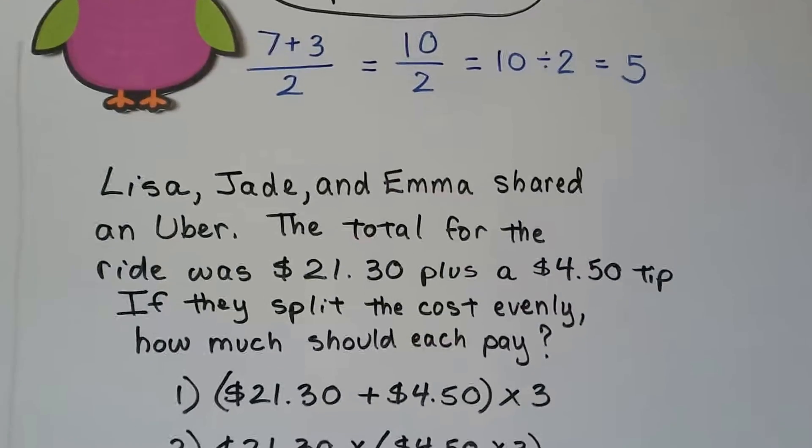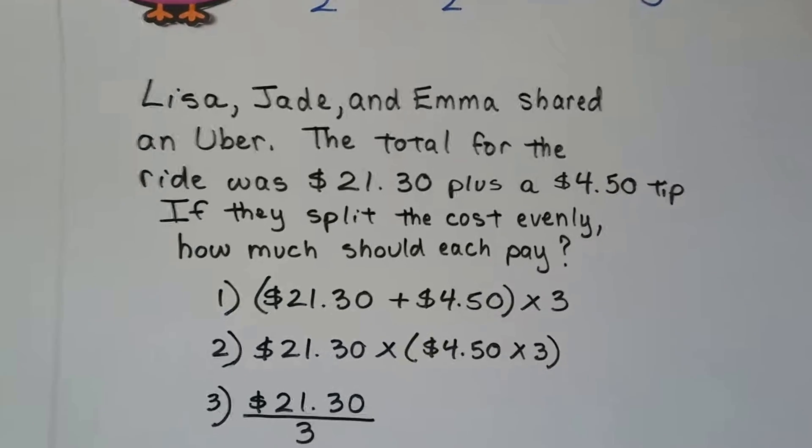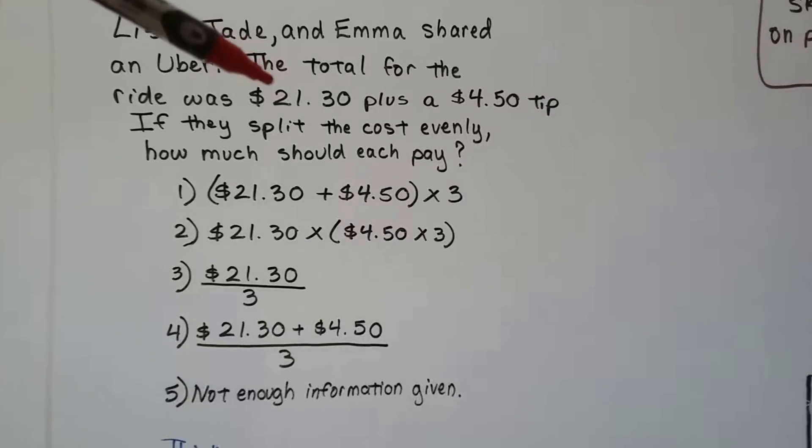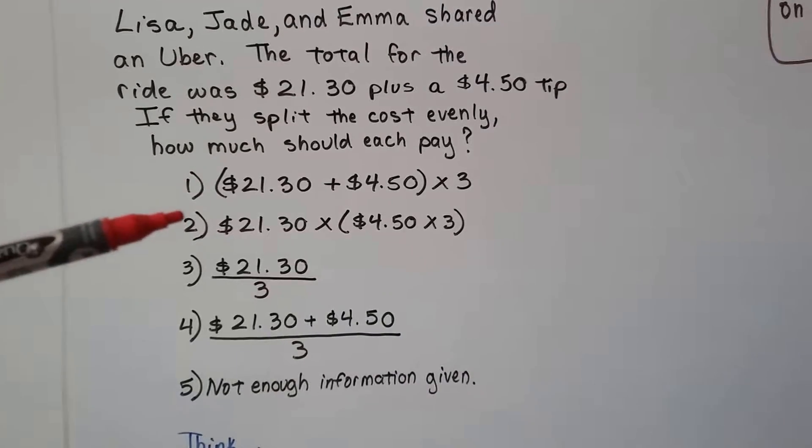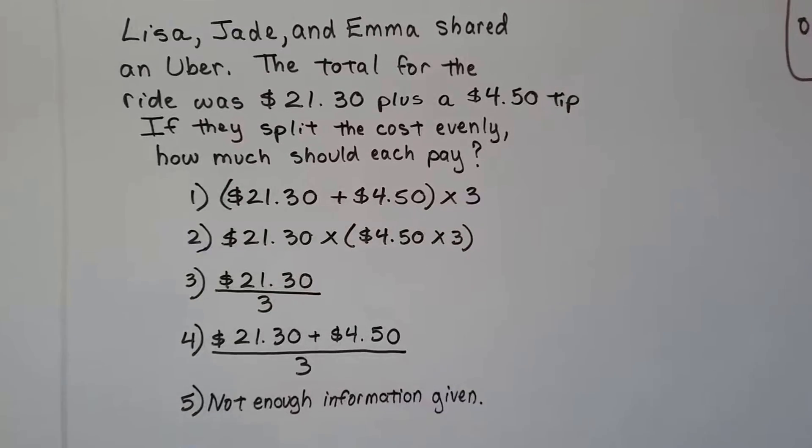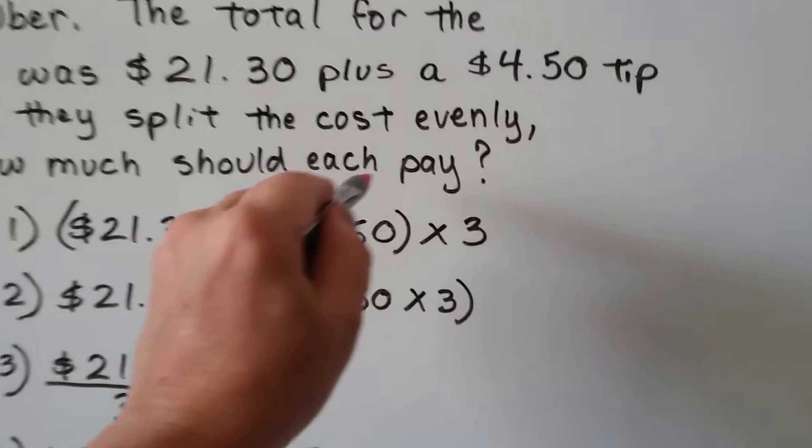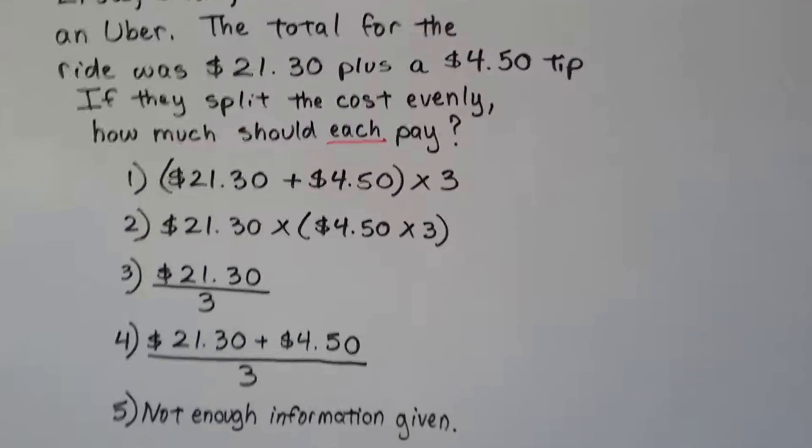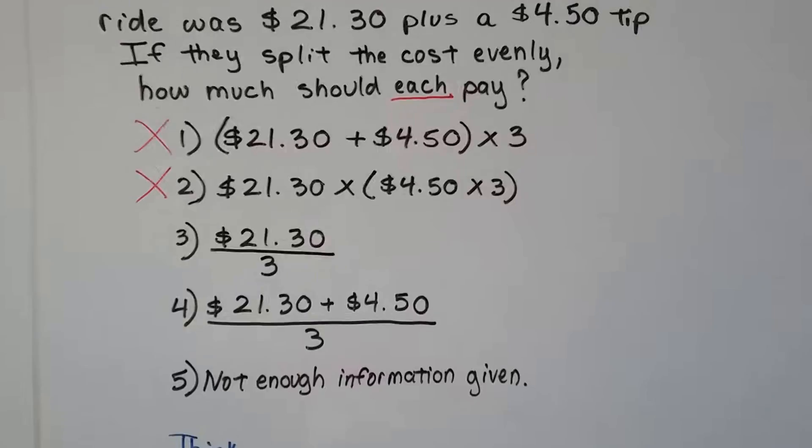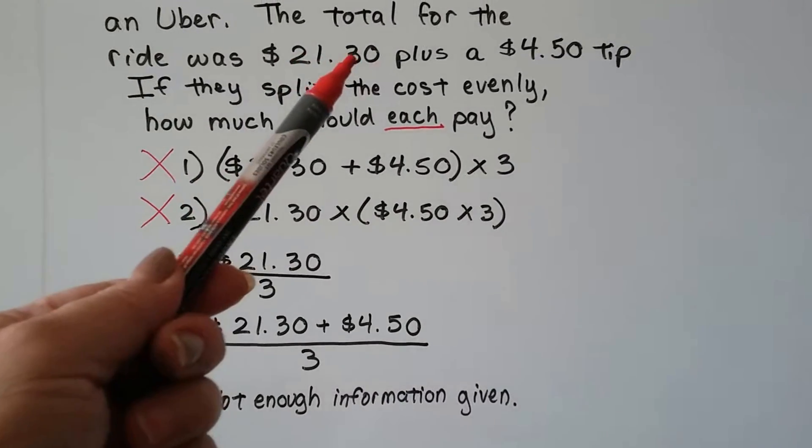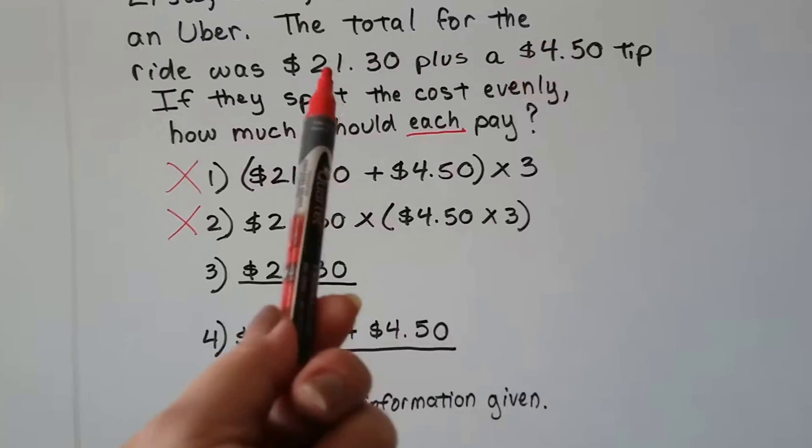So Lisa, Jade, and Emma shared an Uber and the total for the ride was $21.30 plus a $4.50 tip. Now, if they split the cost evenly, how much should each pay? So the ride was $21.30 plus a $4.50 tip. Would it be this one, two, three, four, or five? Not enough information given. And they split this ride. It said, how much should each pay? This word each is telling me that it's division. So we know it's not this one. It's not this one. It's going to be one of these. We look at the $21.30 and the $4.50 tip. Well, if they're splitting a total, we need to total these two, don't we? We need to add these two amounts together.